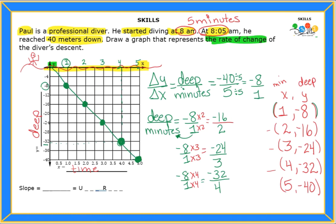So what was my slope for this one? My slope is right here. You don't need to write it as a fraction — you can just write it as a number. The slope is negative 8, and it's negative because he's going underwater. This is my unit rate.